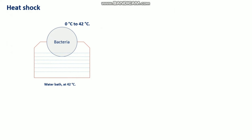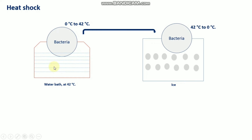Next is the heat shock step, which is used during the transformation process. When bacteria are placed in a water bath at 42°C — a sudden rise from 0°C — heat shock proteins are induced. Then cells are immediately transferred back to ice, causing a sudden temperature drop from 42°C back to 0°C. This temperature change creates pores in the cell membrane.